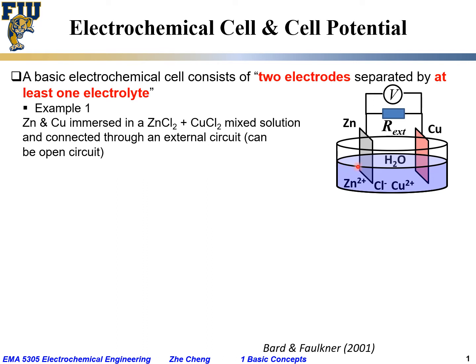This is one example and it is actually the basic concept behind one of the oldest zinc-copper batteries. Some slightly different variations would have a membrane that separates the solution into two parts, and we will talk about those later in this course. So this is one example: two metals inserted into a single solution that contains the salt of the two metals, connected through an external circuit.